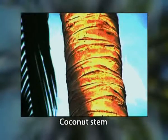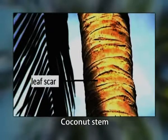Second, the stem. The main stem is normally unbranched with a thick swollen base surrounded by a mass of roots and is crowned by large pinnate leaves. The unbranched trunk is marked by prominent ring-like leaf scars. The coconut stem has no cambium.